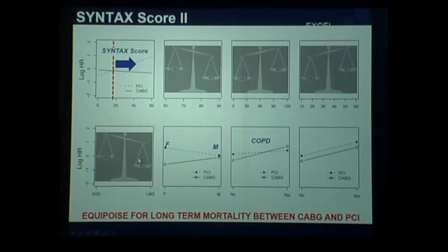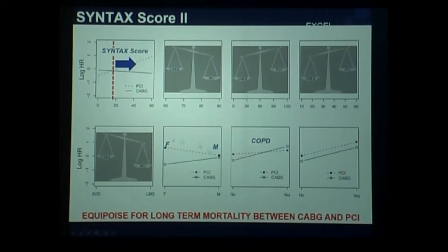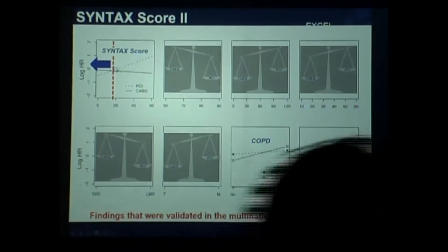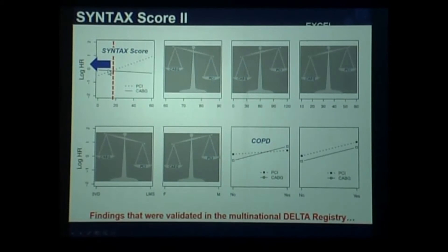If you go to left main and three-vessel disease, we know that left main has an advantage and three-vessel disease is a disadvantage. So for the main stem, we have an advantage and can increase the Syntax score. For female versus male — female doesn't do too well with PCI. We learned that in the Syntax study, so with a female, you have to be careful with the Syntax score.